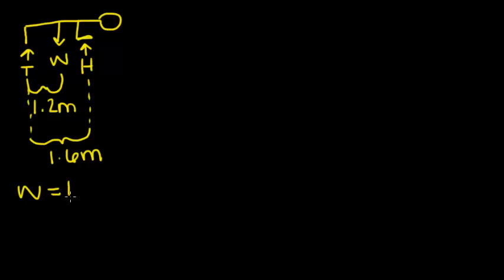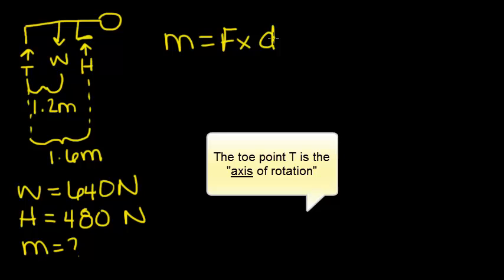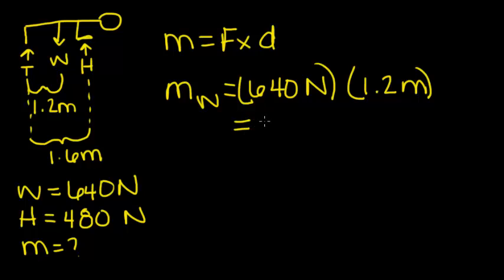We know his weight is 640 newtons and his ground reaction force H is 480 newtons. What we're looking for is the moment. We know that moment is equal to force times distance. A moment is caused by a force acting at a distance from an angle of rotation. In this case, our angle of rotation is point T at his toes. The moment about point T of his weight is 640 newtons times 1.2 meters, which equals 768 newton meters.